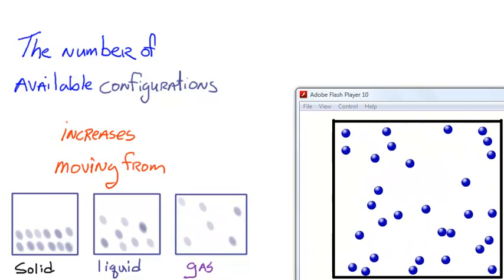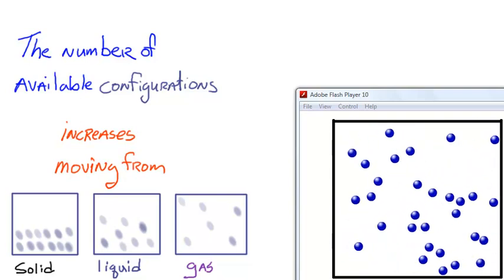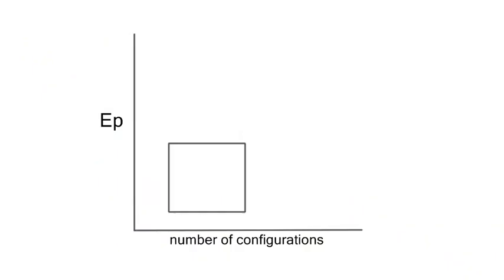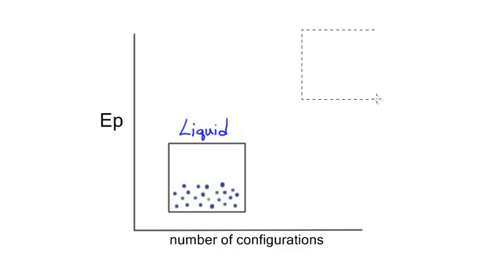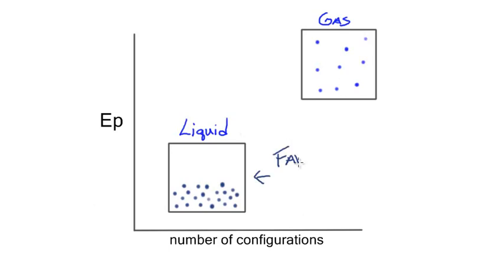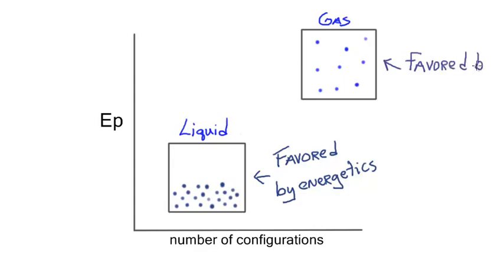Now let's take into account both the potential energy of the particles and the number of configurations, combining these two to form what I call a Peck Diagram — a potential energy versus configurations diagram. As an example, I'd like to plot the liquid state and the gas state. Liquids with respect to gases are of lower potential energy because the particles are on average closer together due to stronger attractive forces, so a liquid is more energetically stable or energetically favored than a gas. But a gas, even though it's less energetically stable, is favored by the number of configurations — particles in the gas phase have far more ways to arrange themselves, both spatially and energetically. So now we have a situation where one state is favored by energetics and the other is favored by the number of configurations — which factor dominates?